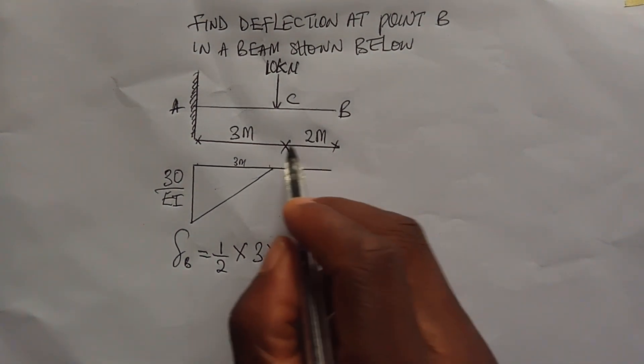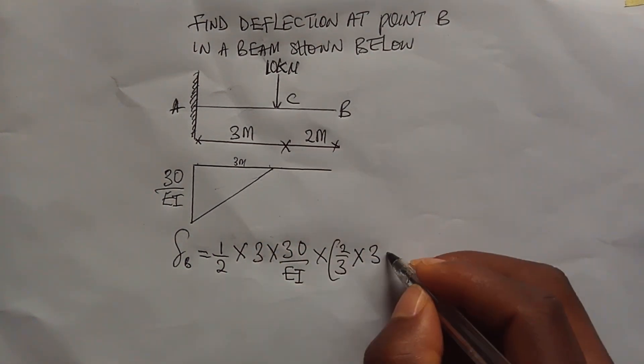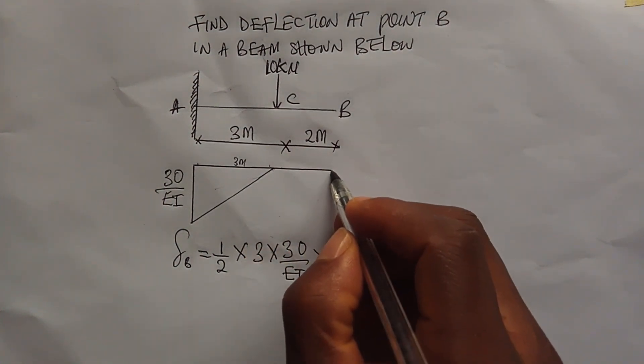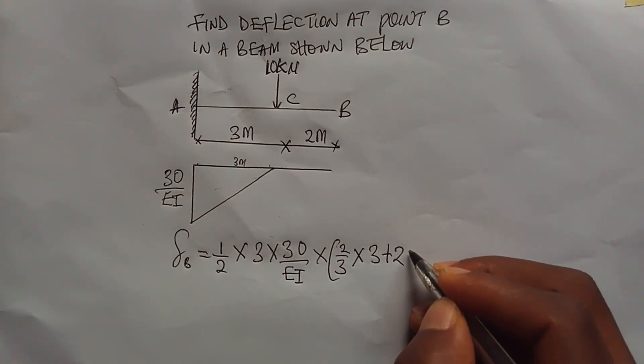Then plus the 2m, which is from here to here, because you are not going to stop at point C. The reason being that you are looking for deflection at point B, so you plus that distance.